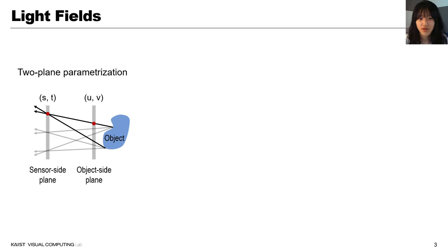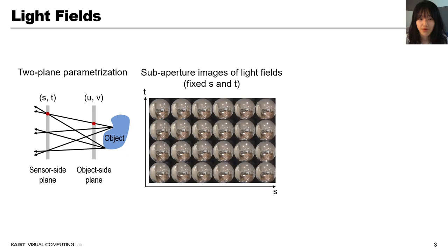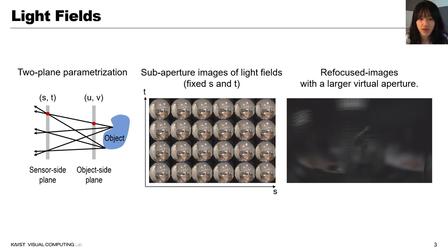A slice of these two-plane parameterization with a fixed sensor-side coordinate ST is called sub-aperture images, and this can be seen as conventional 2D camera projections. By preserving those full light ray information, we can synthesize refocused image with a larger virtual aperture.